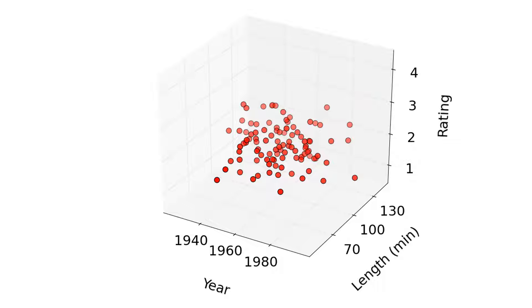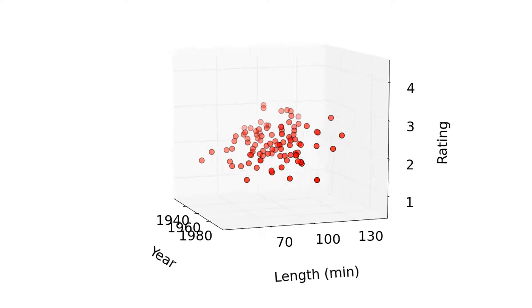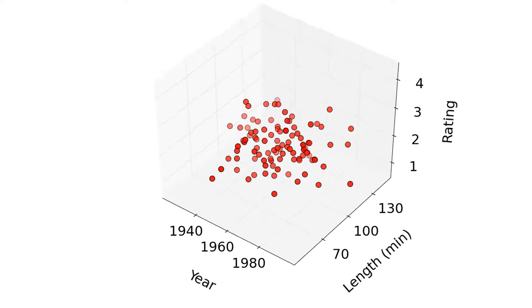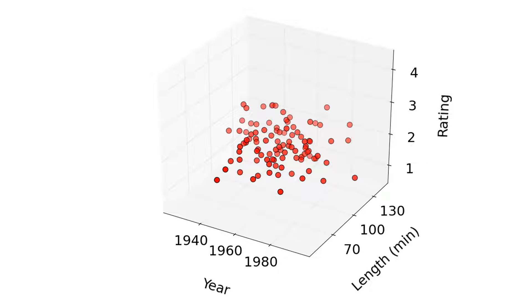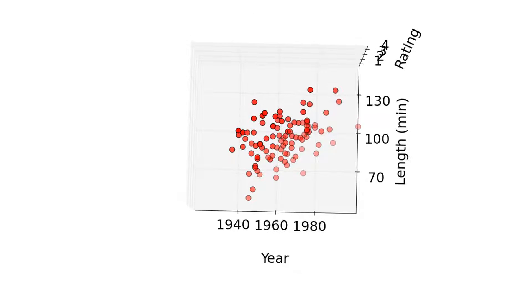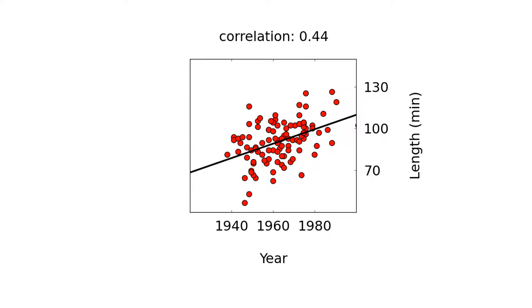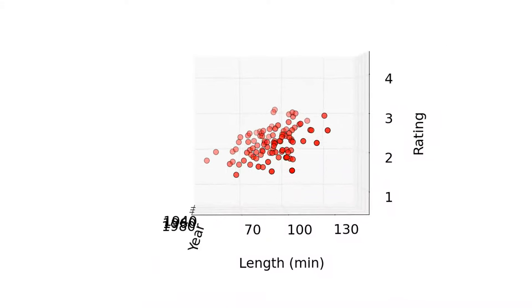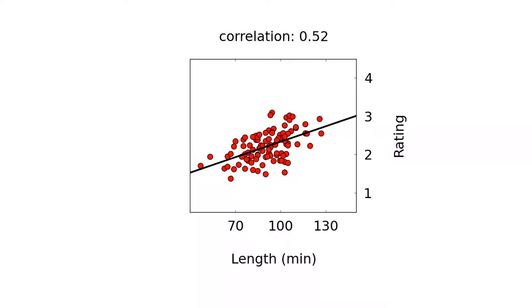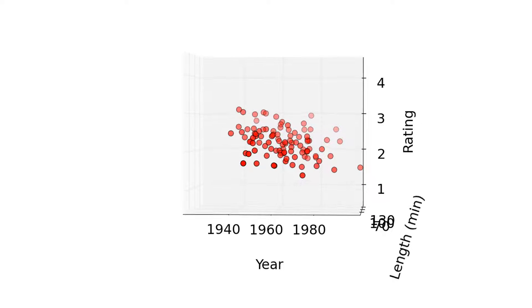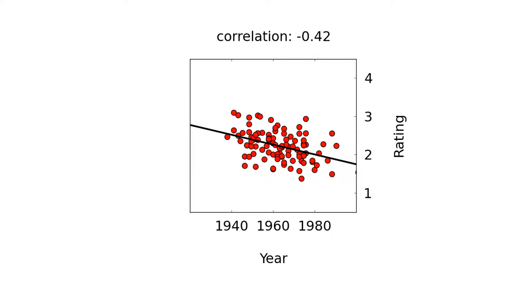To illustrate this further, here's another dataset showing the same behavior but stronger. This 3D scatter plot has no outliers or weird shapes — it was sampled from a three-dimensional normal distribution, so it's about as well-behaved as a dataset gets. Looking at the correlations: release year vs. movie length is 0.44 and statistically significant; length vs. rating is 0.52 and also statistically significant; and the correlation between year and rating is a pretty strongly negative minus 0.42, which is also statistically significant.